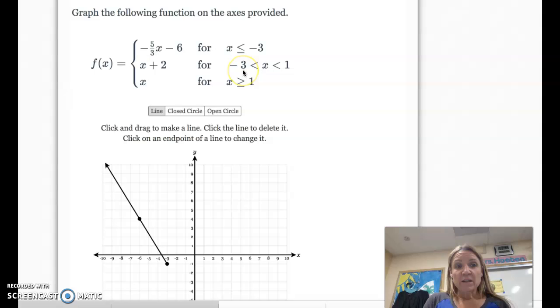But we need it to start at negative 3. So if we plug a negative 3 in here, negative 3 plus 2 is negative 1. So at negative 3, we have a point. It's a shared point right here.